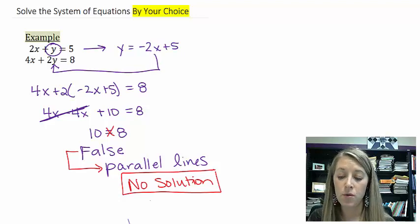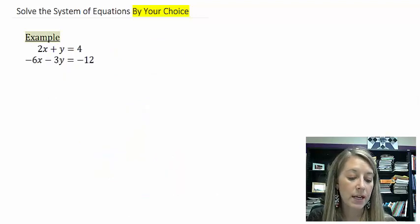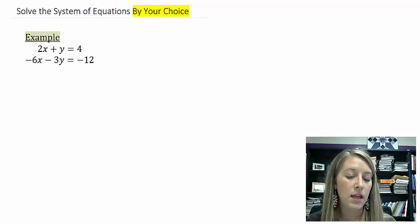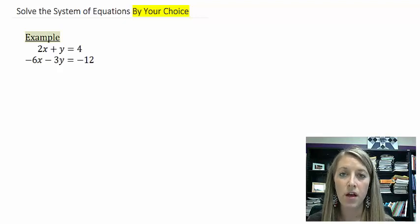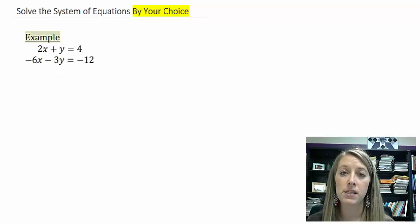Let me give you another example. 2x plus y is equal to 4, and my second equation is negative 6x minus 3y is equal to negative 12. I suggest you pause the video, solve this system of equations by substitution or elimination, and see if you can come up with the answer.